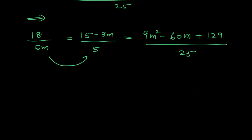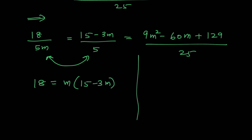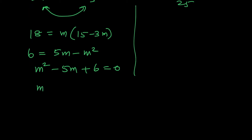Taking the first two equations and cancelling 5 on both sides: 18 = m(15 − 3m). Cancel 3: 6 = 5m − m², giving m² − 5m + 6 = 0. Factoring: (m − 2)(m − 3) = 0, so m = 2 or m = 3.